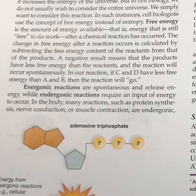Free energy is the amount of energy available, that is, energy that is still free to do work, after a chemical reaction has occurred. The change in free energy after a reaction occurs is calculated by subtracting the free energy content of the reactants from that of the products. A negative result means that the products have less free energy than the reactants, and the reaction will occur spontaneously. In our reaction, if C and D have less free energy than A and B, then the reaction will go.